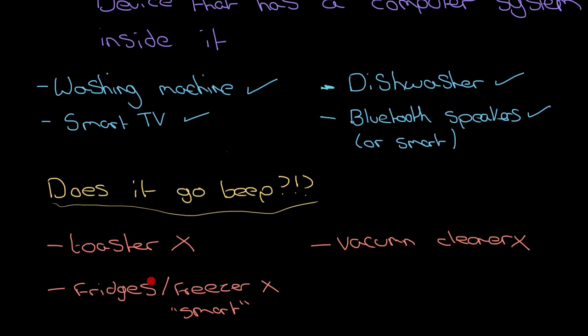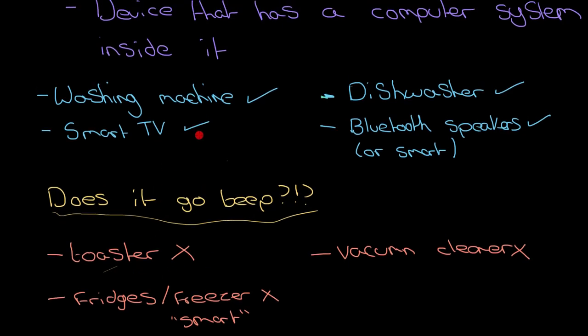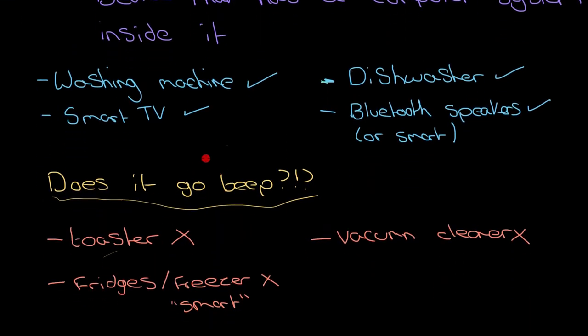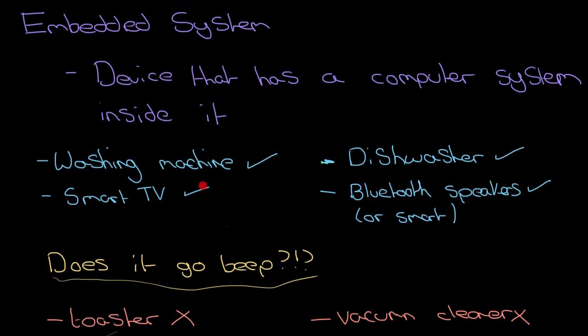Whereas these really just don't have the processing part of it. They might have an input like a toaster, like you're pulling a lever down. But then there's no processor. There's nothing to do with that after you've got that information. It just basically runs a simple timer. So they are embedded systems. Hopefully that helps you identify them. But the main thing to remember is that any sort of device that has a computer system inside it.